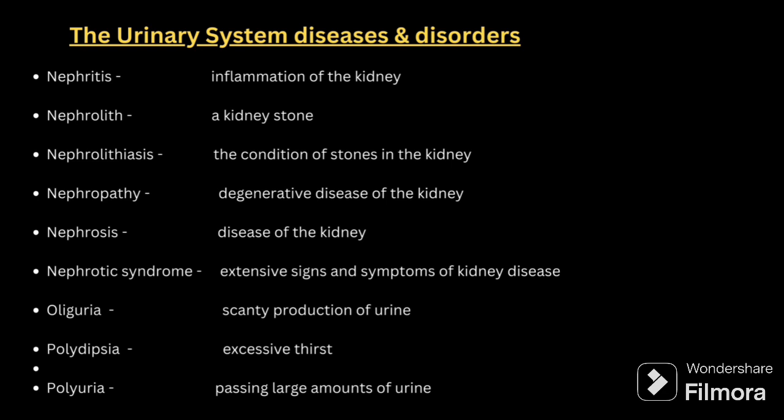Additional conditions include: nephritis — inflammation of the kidney; nephrolithiasis — kidney stones; nephropathy — disease of the kidney; nephrosis — kidney disease; oliguria — scanty production of urine; polydipsia — excessive thirst; polyuria — passing large amounts of urine; and nephrotic syndrome — extensive signs and symptoms of kidney disease.